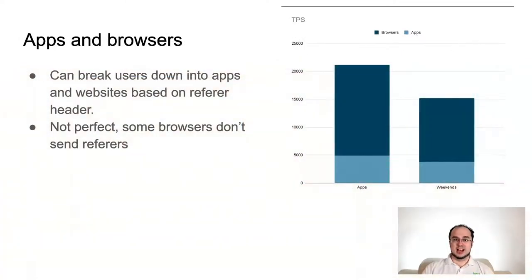Browsers send a referrer header to indicate what website they are requesting from, while apps send a user agent to indicate what app they are. Apps can be mobile-based or desktop apps like QGIS, Marble, or ArcGIS. This isn't perfect because some apps incorrectly send a referrer and some browsers are set up to not send one. Most requests come from browsers at all times, with a higher portion on weekdays.